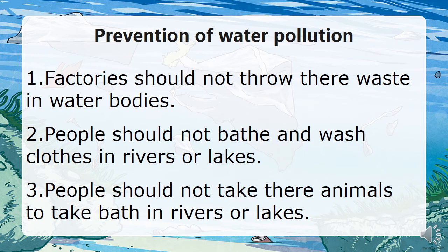How do we prevent water pollution? First, factories should not throw their waste into water bodies. Second, people should not bathe or wash clothes in rivers or lakes. And third, people should not take their animals to bathe in rivers or lakes.